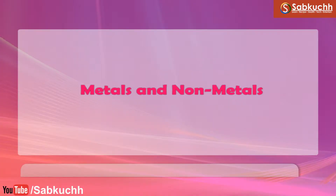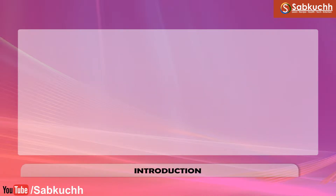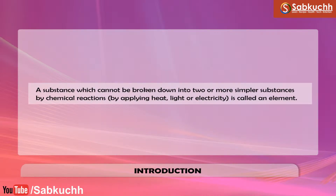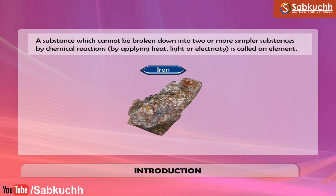Metals and Non-Metals Introduction. A substance which cannot be broken down into two or more simpler substances by chemical reactions by applying heat, light or electricity is called an element. For example, iron is an element because it cannot be broken down into two or more simpler substances.